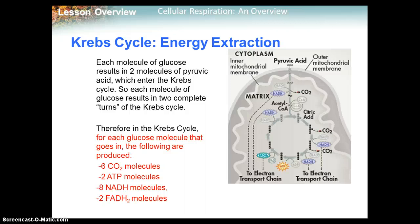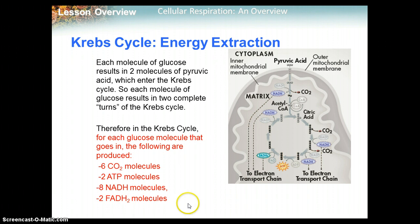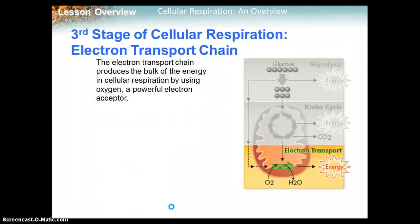Therefore, in the Krebs cycle, for each glucose molecule that enters, you produce: six carbon dioxide molecules, two ATP molecules, eight NADH molecules, and two FADH2 molecules. Those are all the products of the Krebs cycle stage of cellular respiration.